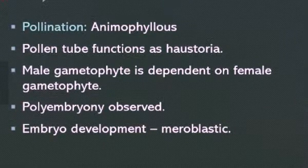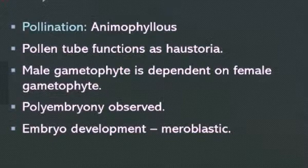Regarding pollination, it is anemophilous. The pollen tube functions as a haustorium. The male gametophyte is dependent on the female gametophyte. Polyembryony can be seen, and the embryo development is meroblastic — this is the type of embryo development seen in gymnosperms.